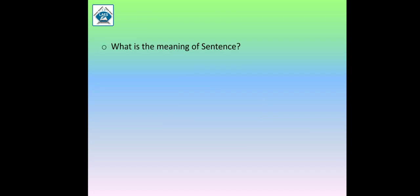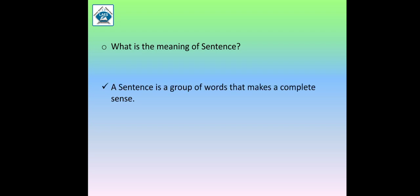Let us understand what is a sentence, or what is the meaning of sentence. A sentence is a group of words that makes a complete sense. So a sentence is nothing but a group of words — more than one word — that makes a complete sense, which has a meaning. It is simply a group of words that makes a good and complete sense and has a useful meaning. That is a sentence.